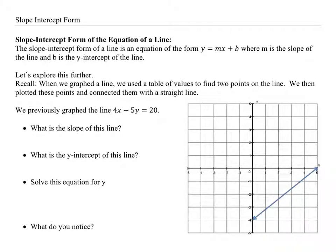Now we're going to work on the slope-intercept form of a line. That's the equation y equals mx plus b, where m is the slope and b is the y-intercept.